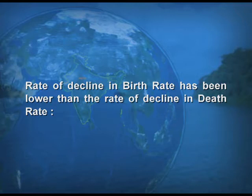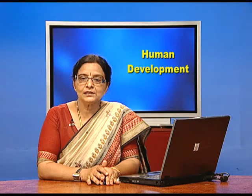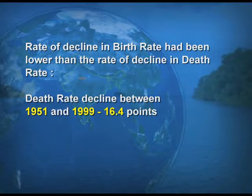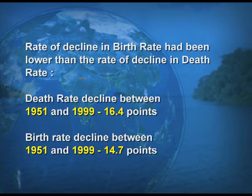The rate of decline in the birth rate has been lower than the rate of decline in the death rate. From 1951 to 1999, the decline in the death rate was 16.4 points, whereas the decline in the birth rate for the same period was 14.7 points.